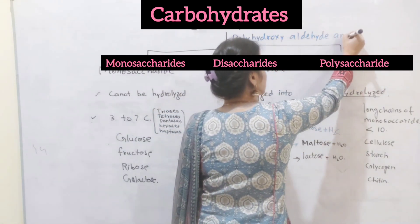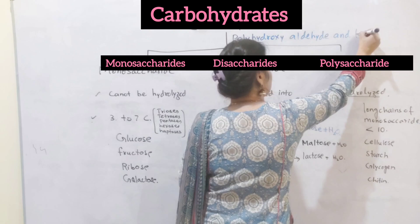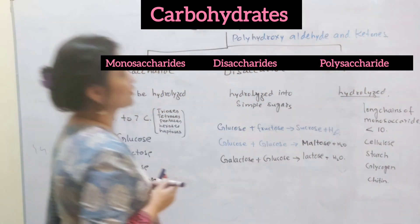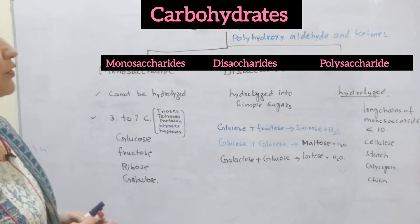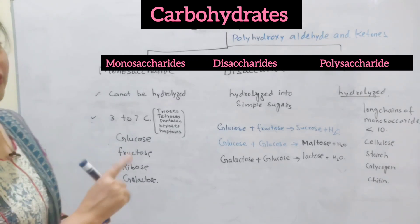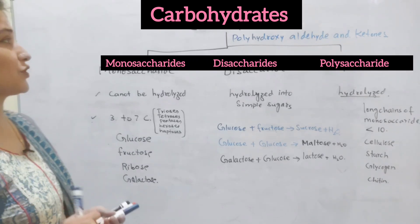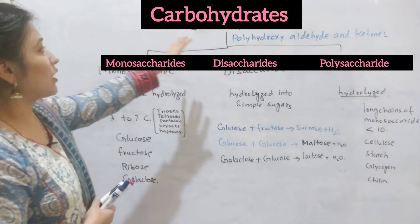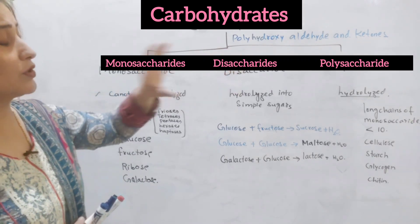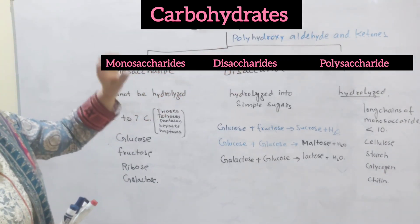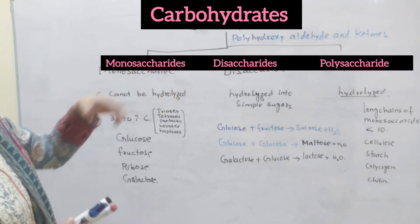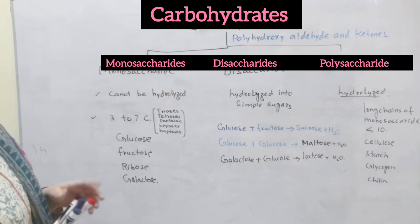The modern definition of carbohydrate is polyhydroxy aldehydes and ketones. Carbohydrates are actually aldehydes and ketones — these are two groups of organic compounds. Polyhydroxy means many hydroxyl groups, that is, OH groups.